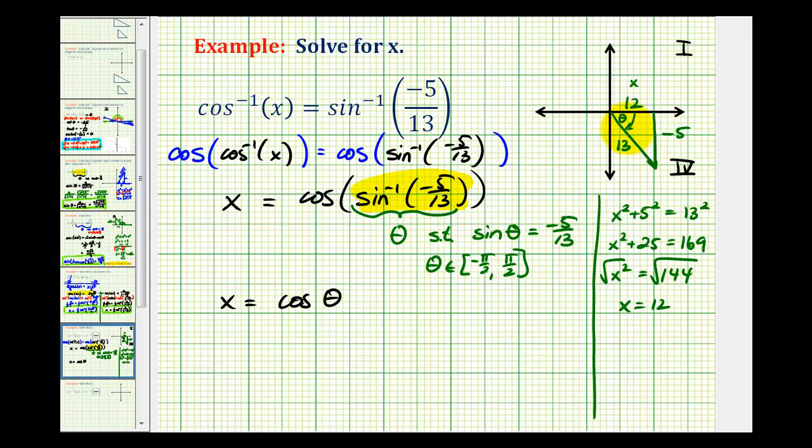Now cos(θ) is the ratio of the length of the adjacent side to the hypotenuse, or 12/13. So x = 12/13, which is the solution to the given equation.